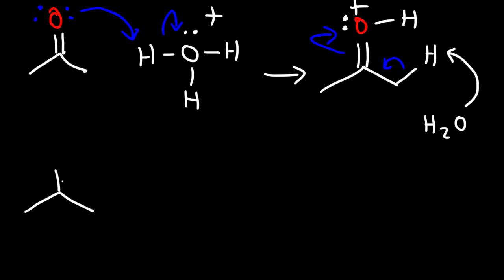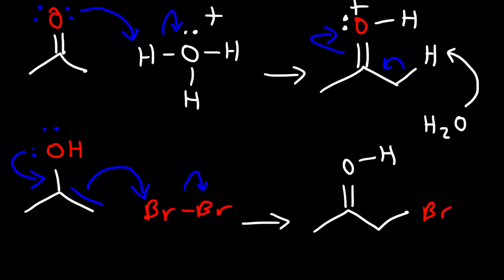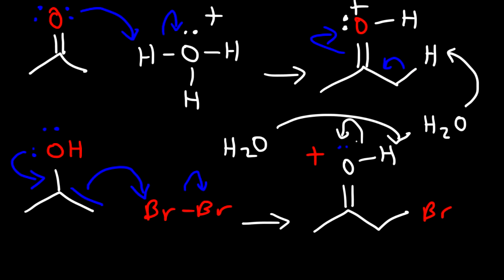The ketone is now in the enol form. The enol form is going to react with Br2. A lone pair from the OH group is used to form a pi bond, pushing the pi electrons out, causing it to attack the Br2 molecule. Now we have this intermediate species, and in the next step we're going to use another H2O molecule to remove the hydrogen, giving us our final product.